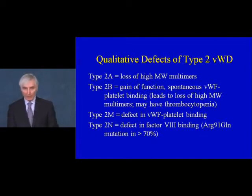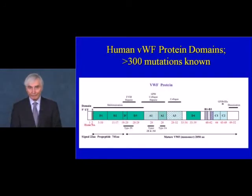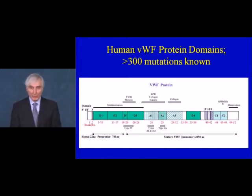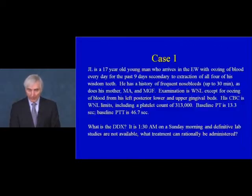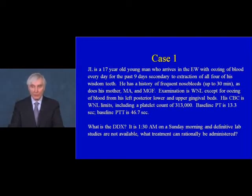The von Willebrand factor protein has a number of important domains: one where factor VIII binds, one where collagen, glycoprotein 1B, and heparin interact with the von Willebrand factor, and another domain where microfibular collagen can bind. There are more than 300 mutations presently known in the von Willebrand factor gene.